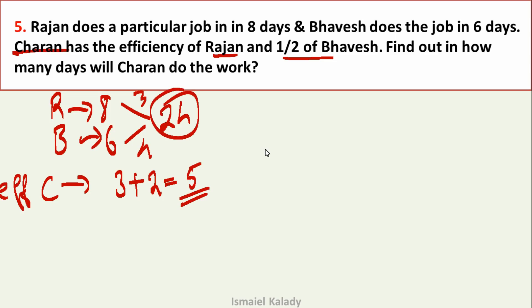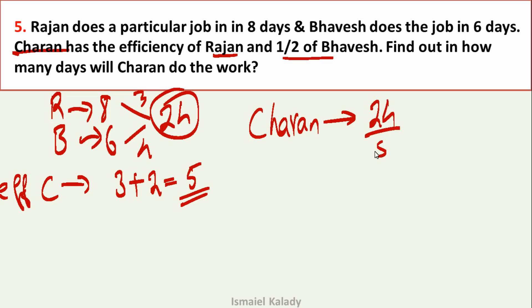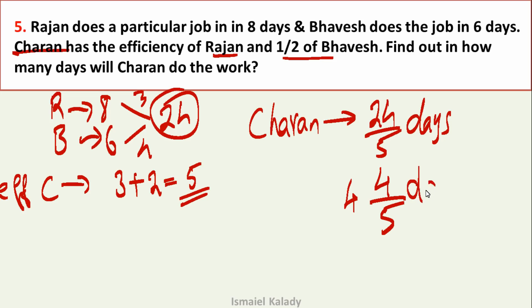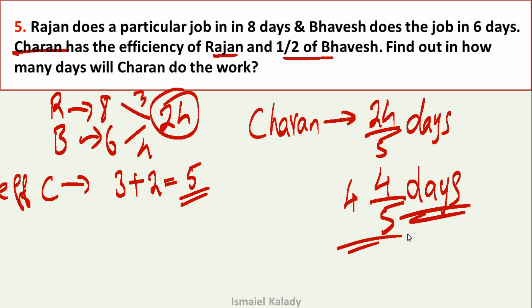Total work is 24. Charan's total efficiency is 5. So Charan completes the work in 24 ÷ 5 days. We can't divide further, so it's a mixed fraction: 4 and 4/5 days.